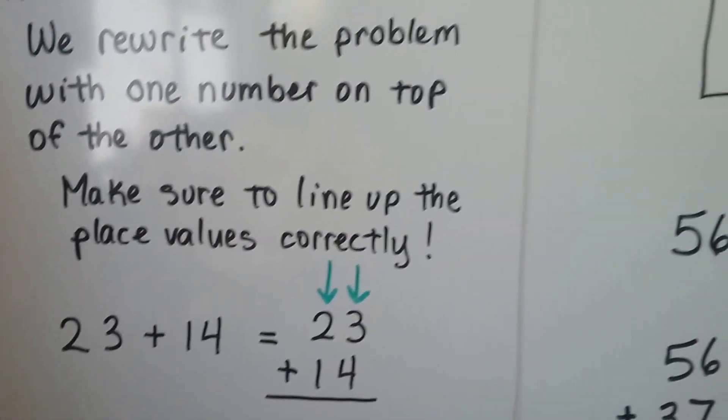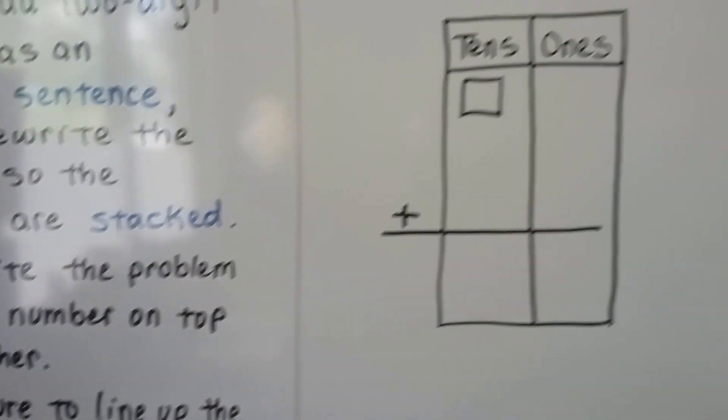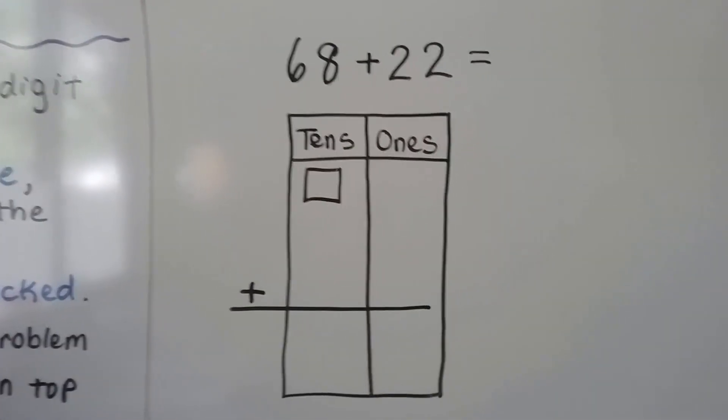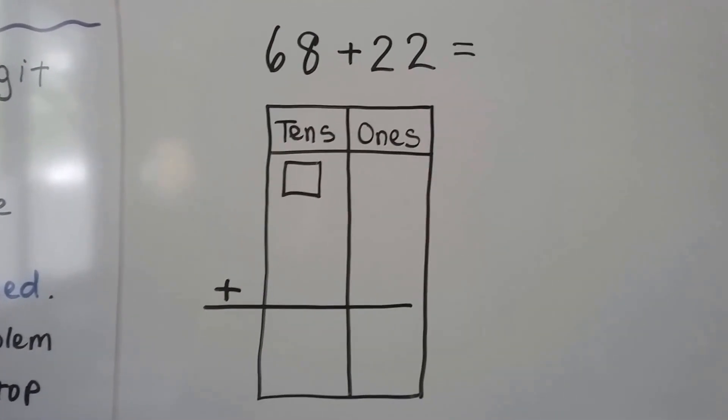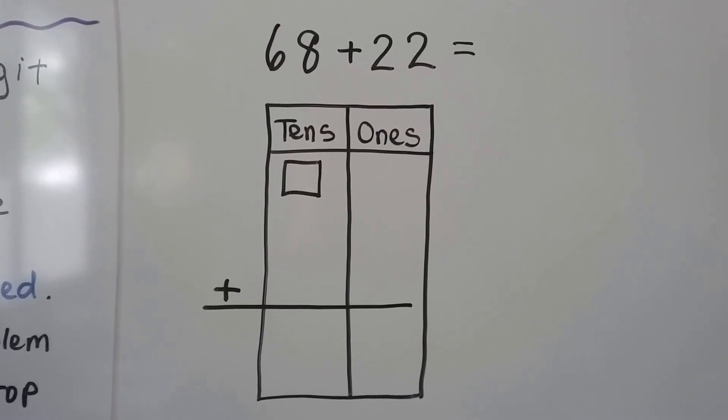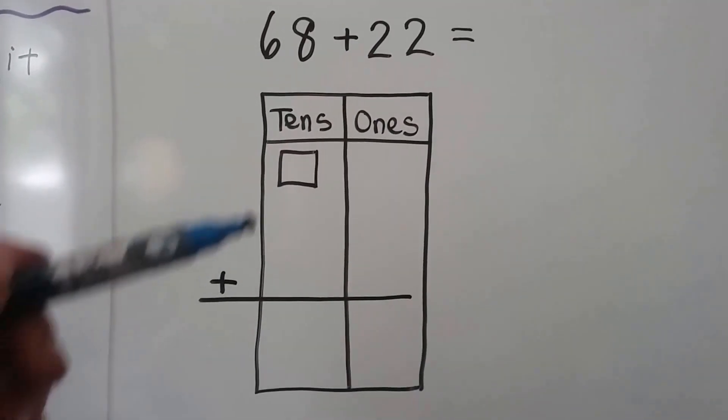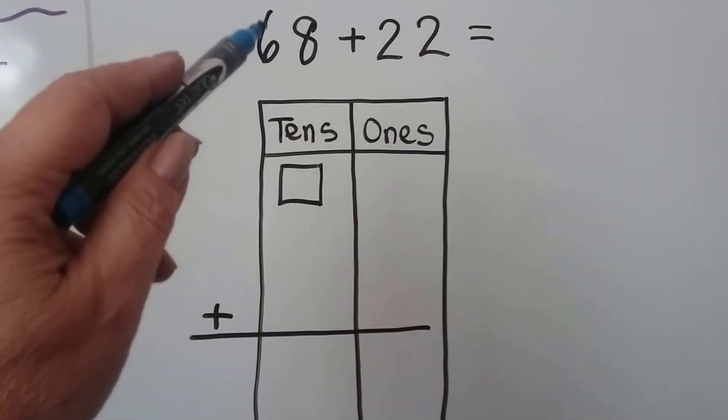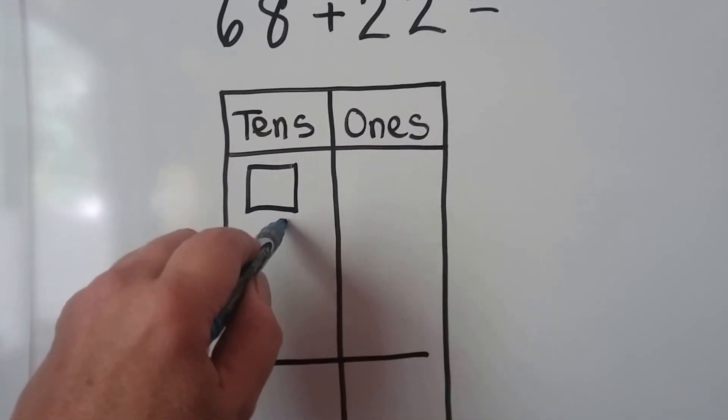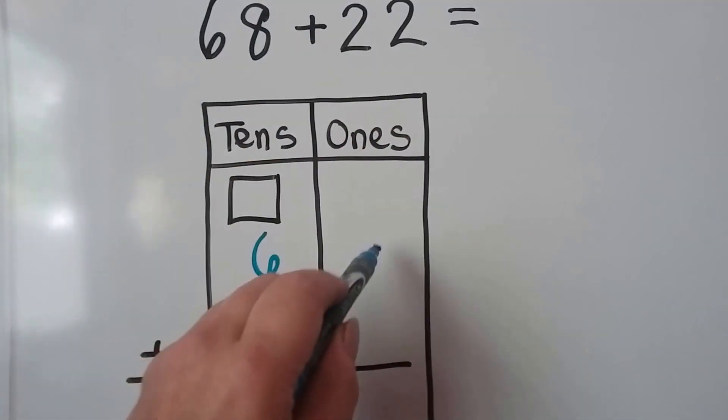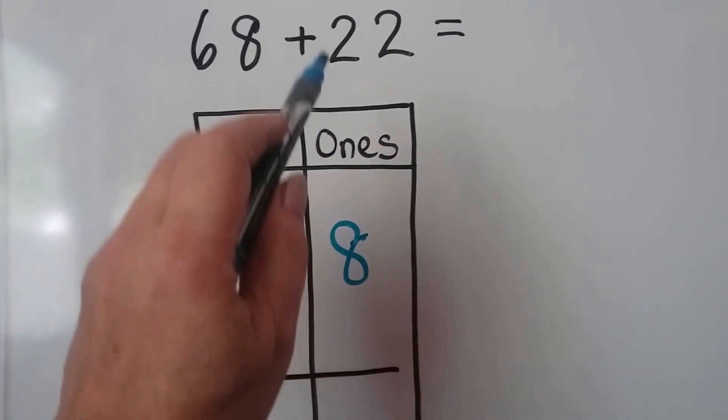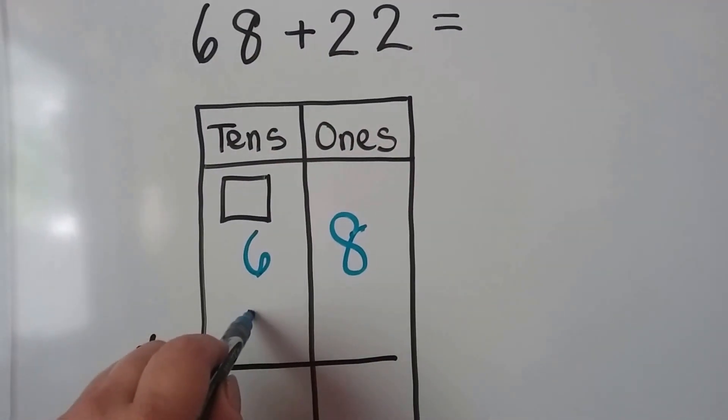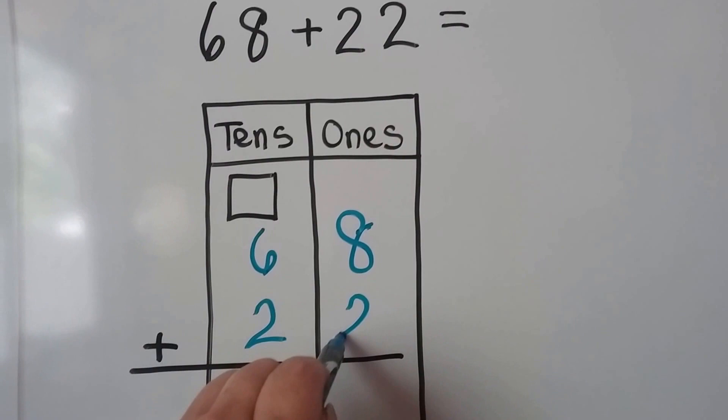So keep practicing adding your two-digit numbers and we're going to do a few here. We have an addition sentence of 68 plus 22. We can rewrite it stacked. We write the six tens here and the eight ones here and we write the two tens for the 22 here and the two ones here.